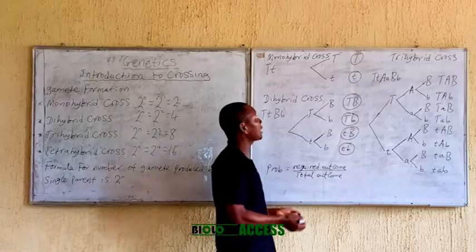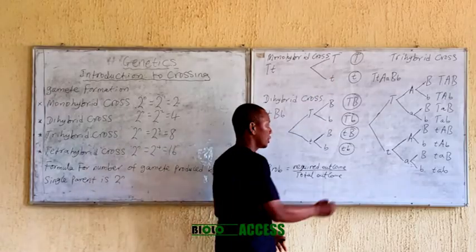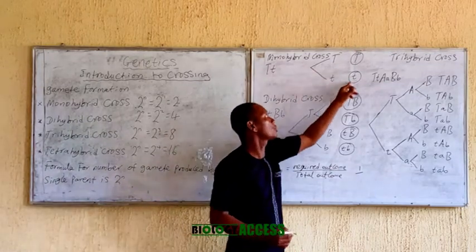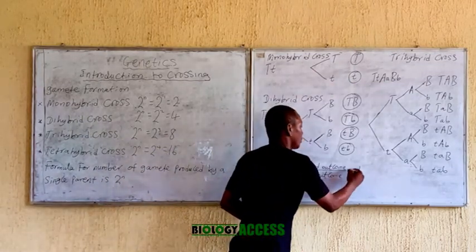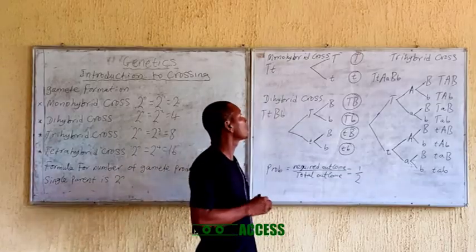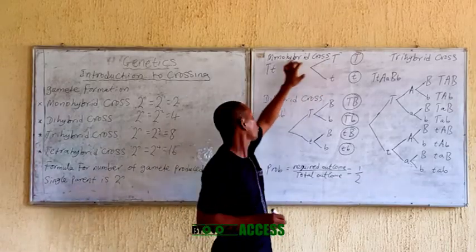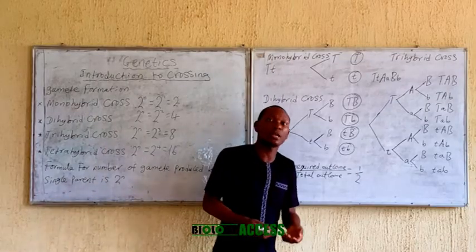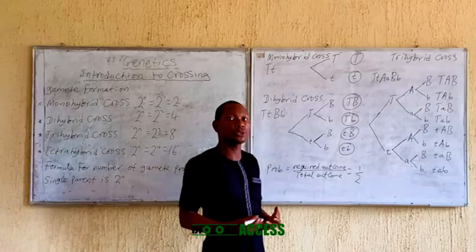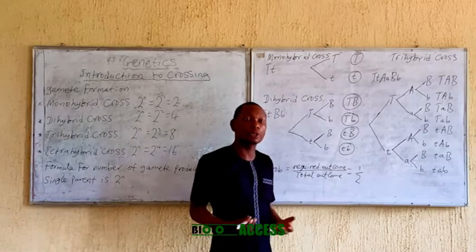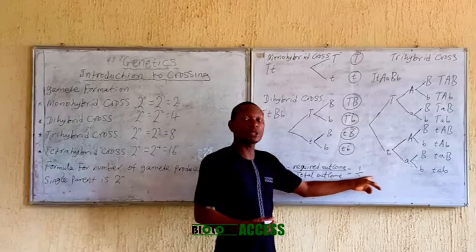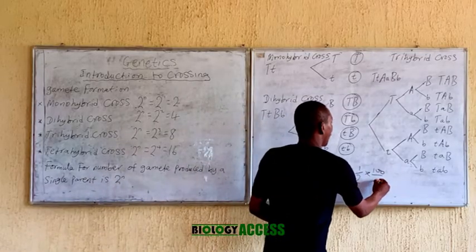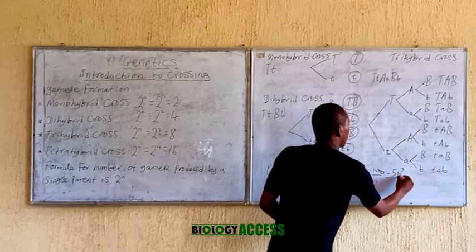So what is the required outcome? The tall gene — and it is 1. What is the total outcome? One, two. So the probability of having a tall gene in a gamete for this trait is 1 over 2. You can convert it to decimal, which is 0.5, or convert it to percentage by multiplying 1/2 times 100, which gives 50 percent.